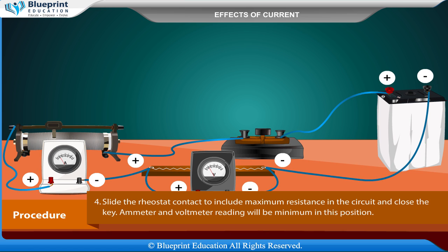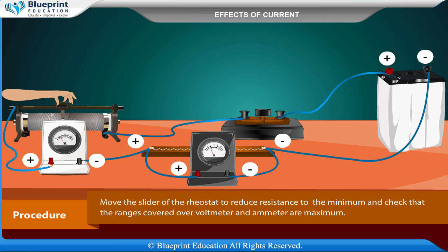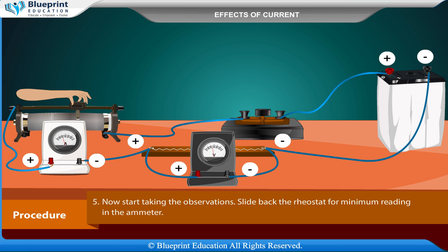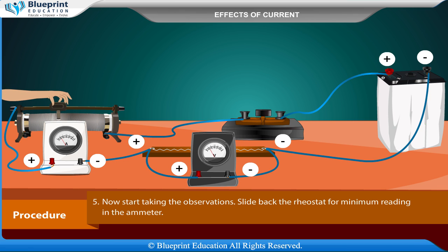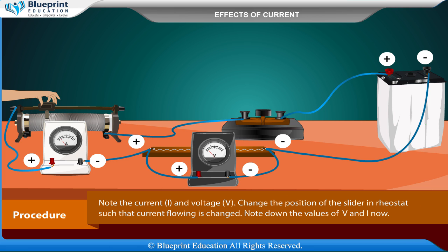Slide the rheostat contact to include maximum resistance in the circuit and close the key. Ammeter and voltmeter readings will be minimum in this position. Move the slider of the rheostat to reduce resistance to the minimum and check that the ranges covered by the voltmeter and ammeter are maximum. Now start taking observations. Slide back the rheostat for minimum reading in the ammeter. Note the current I and voltage V.